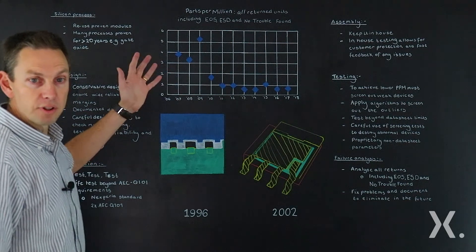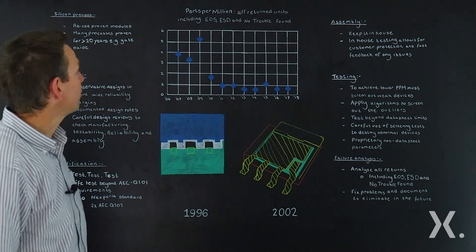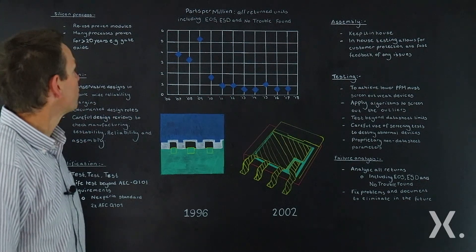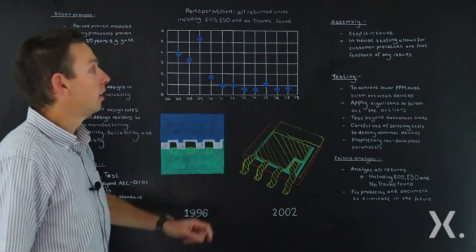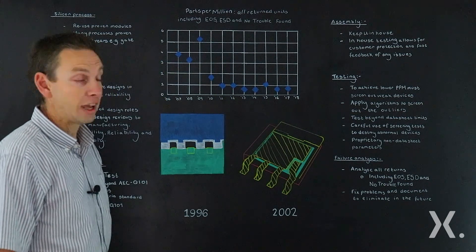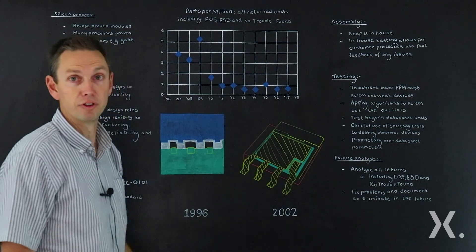And what we plot here, we don't just plot failing units but we plot every single failure back from customers. So we include devices which have failed for electrical overstress, because of VSD failures, or even also including MOSFETs which have come back for no trouble found.